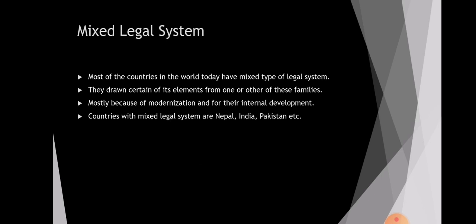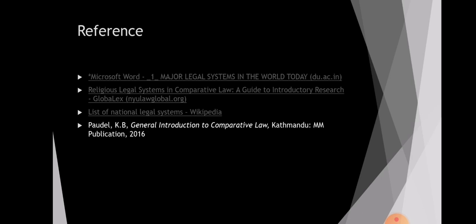Besides all these legal systems, most countries in the world have a mixed legal system, where they draw elements from more than one of the above legal systems. They adopt the good points of those legal systems and form their own, due to modernization or internal development needs. Countries with mixed legal systems include Nepal, India, and Pakistan, where one can find practices of civil law, common law, and religious law together. That's all about the major legal systems of the world. Thank you very much.